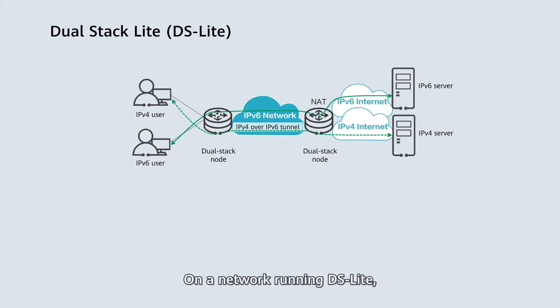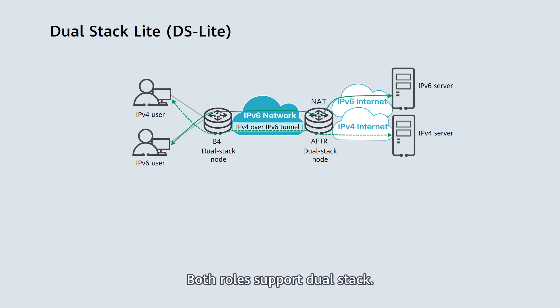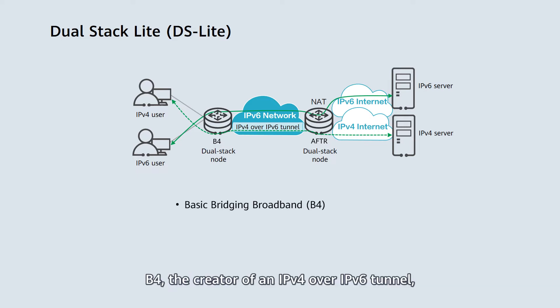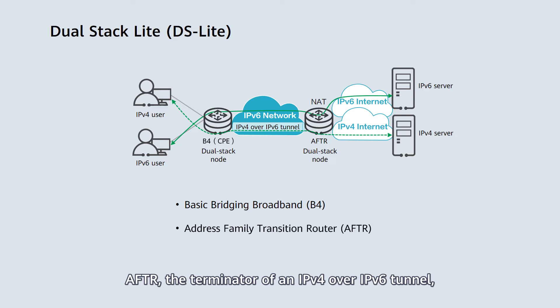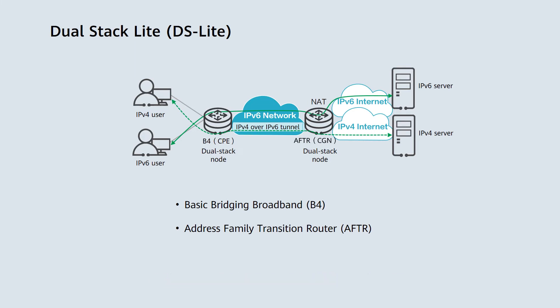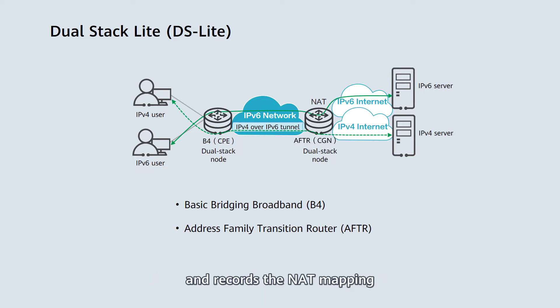On a network running DS-Lite, two new roles are introduced: B4 and AFTR. Both roles support dual stack. B4, the creator of an IPv4 over IPv6 tunnel, is usually implemented on CPEs. AFTR, the terminator of an IPv4 over IPv6 tunnel, is usually deployed on CGN devices. It decapsulates IP packets, performs NAT, and records NAT mapping.